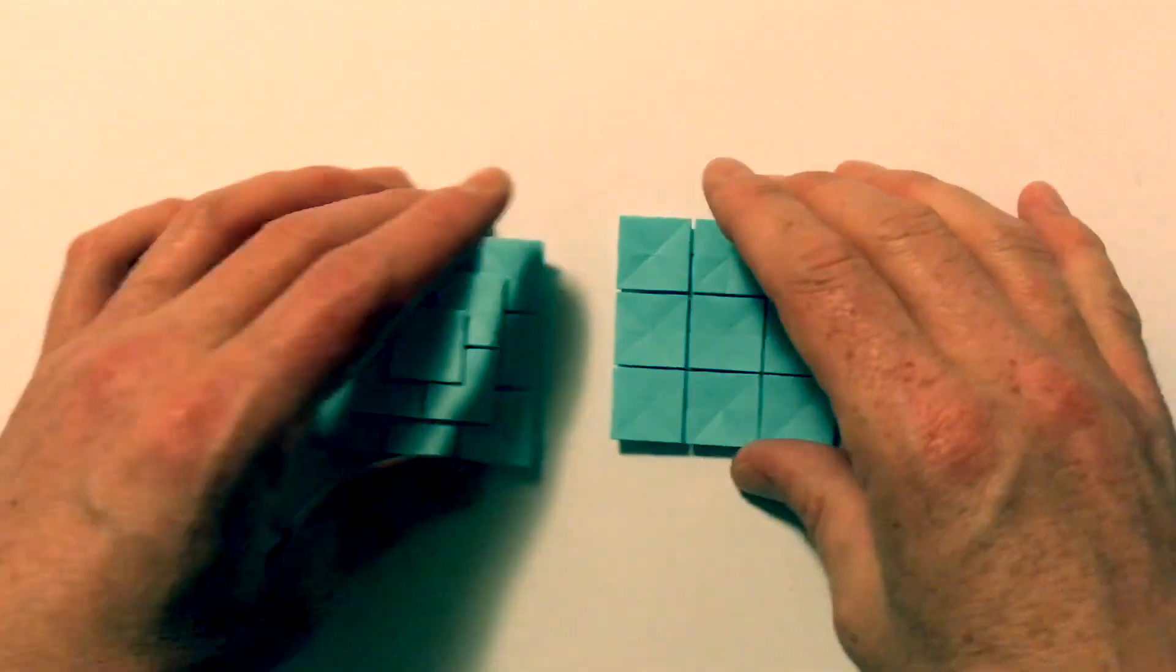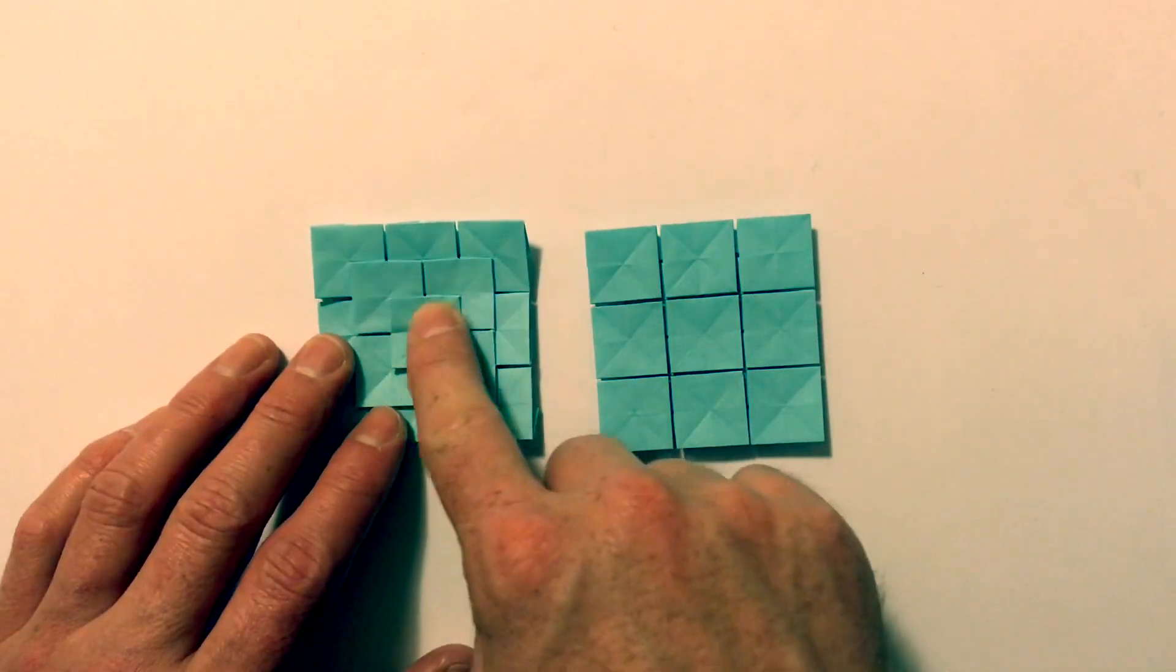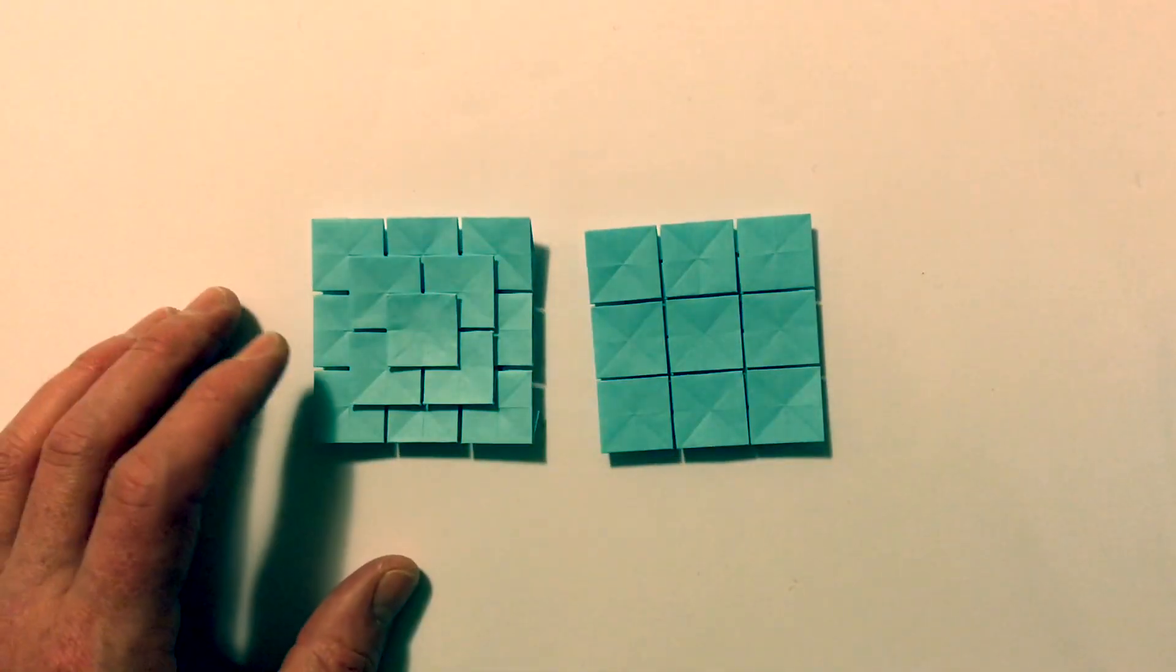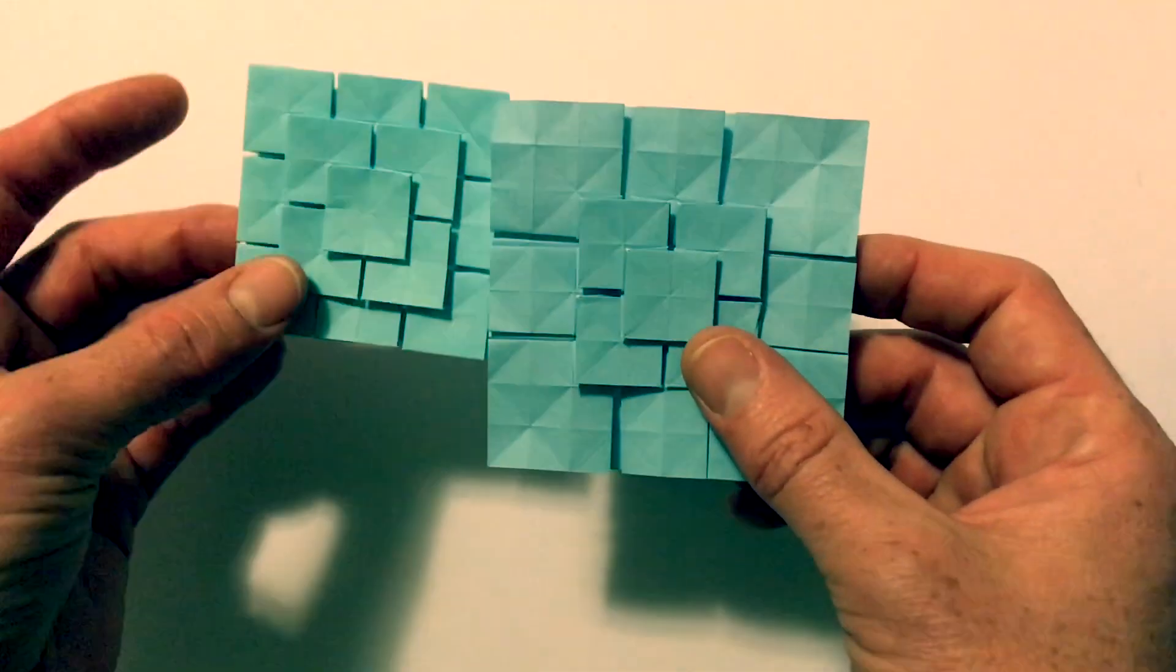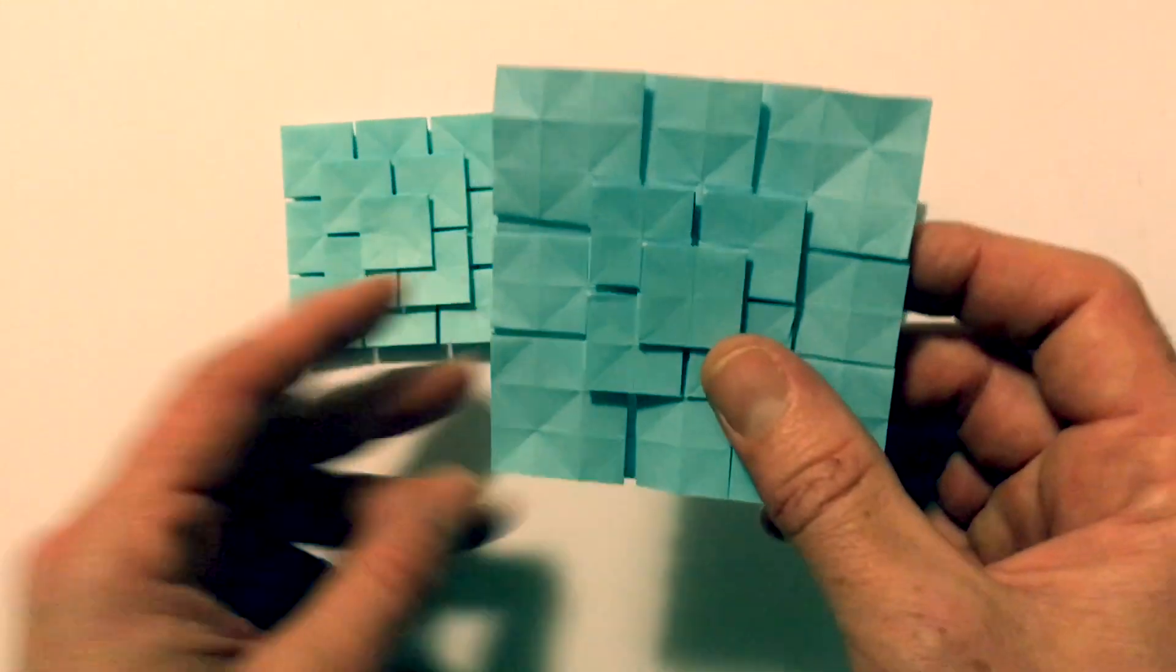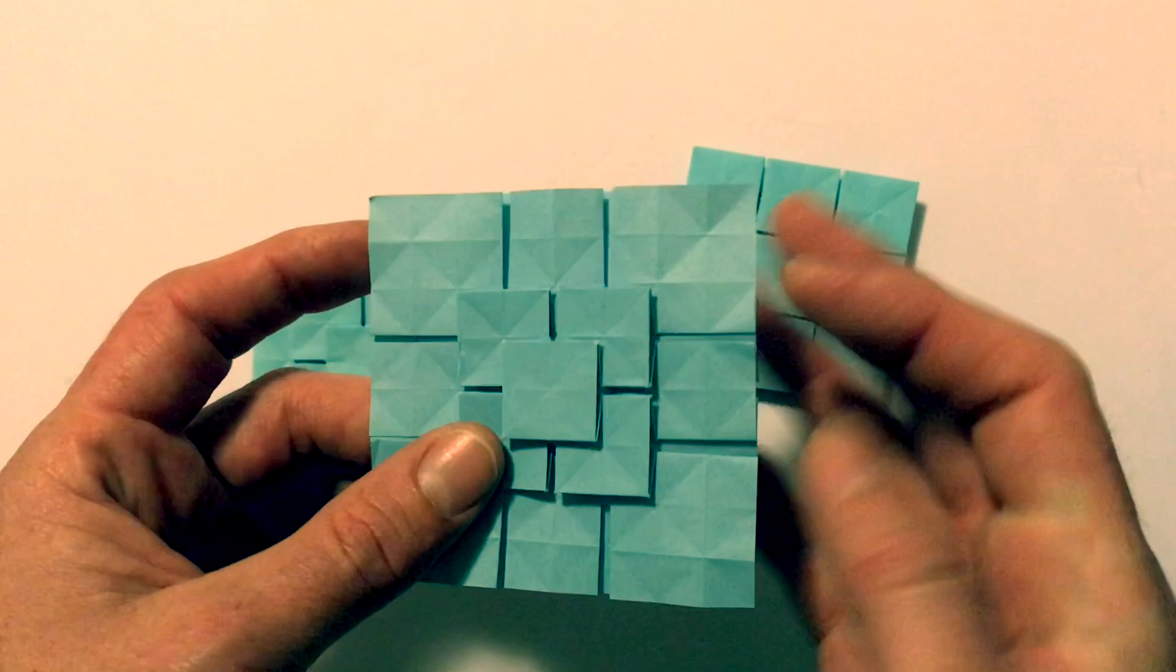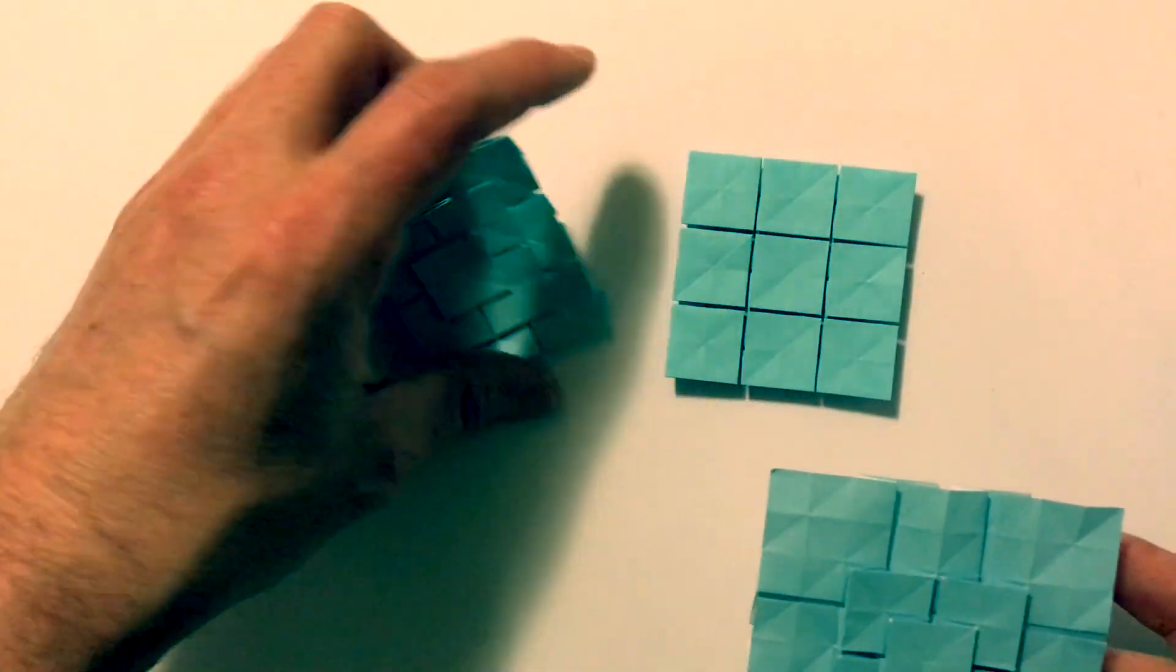All right, so in my previous video I showed you how to fold this using a similar technique to fold this one. What we're going to do now is I'll show you how once you've already got this, how to turn it into this. Okay, so this here is the same as this. I just haven't folded the corners in because it's easier to change them around without the edges done.